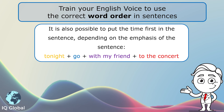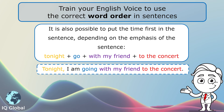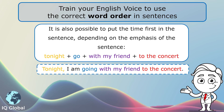Have a look at the full sentence: 'Tonight I am going with my friend to the concert.' We are putting the time 'tonight' at the beginning because that tells us the time of the concert, and you are putting emphasis on the time in this sentence. That is why it is going at the beginning.